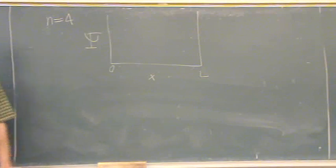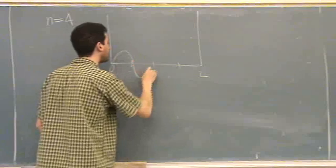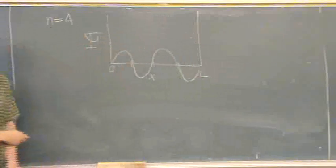There's how many nodes for n equals 4? Three. One, two, three. There it is.